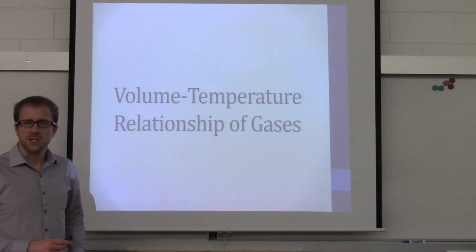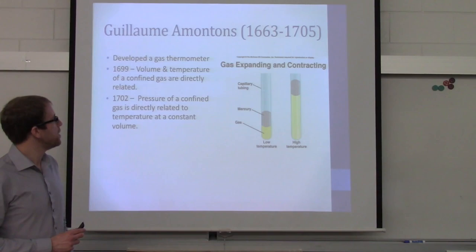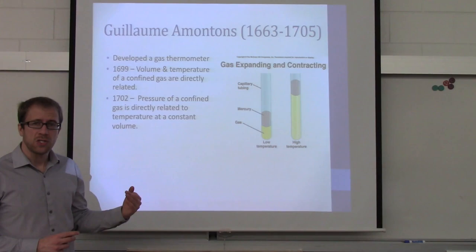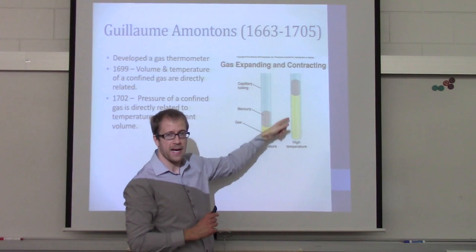So let's explore that relationship between volume and temperature of a gas. This all starts with — sorry, I'm going to butcher this gentleman's name — Guillaume Amontons. He developed the first gas thermometers. What he did is he took some gas and trapped it with mercury. He found that as the temperature increased, the volume of that gas increased, and as the temperature decreased, the volume of that gas decreased.